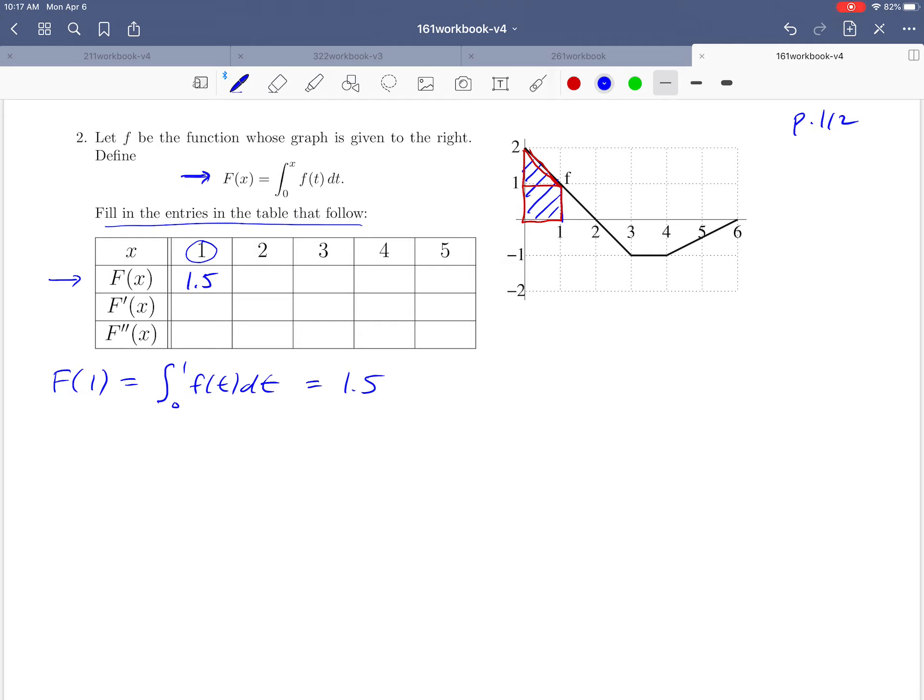Everything in this first row has to do with integrals representing areas on our original function. For F(2), we integrate from 0 to 2, adding area to what we had between 0 and 1. Adding the triangle between 1 and 2 gives an additional 0.5 units of area, so 1.5 plus 0.5 equals 2 for F(2).